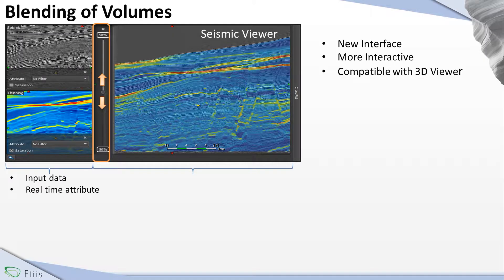Here we are looking at the interface. This is a two-channel interface, and we are playing with volumes right now. In the first dropping area, we used our seismic. In the second dropping area, we used a geomodel attribute called scenic. In this area here, you can see the blending area, where we can have a look at the blending between the seismic and the thinning.